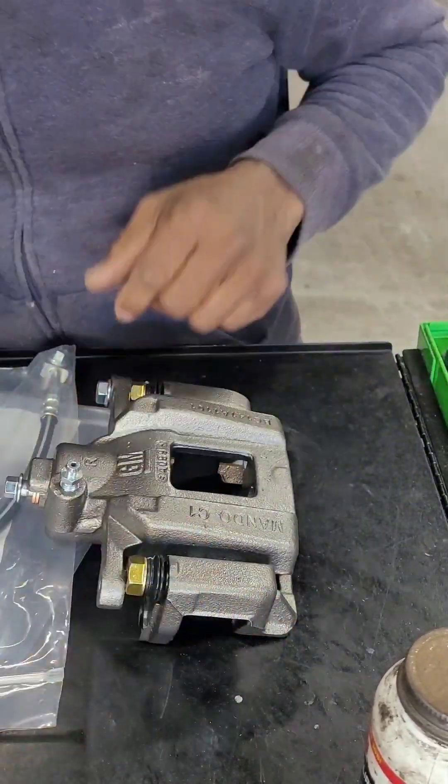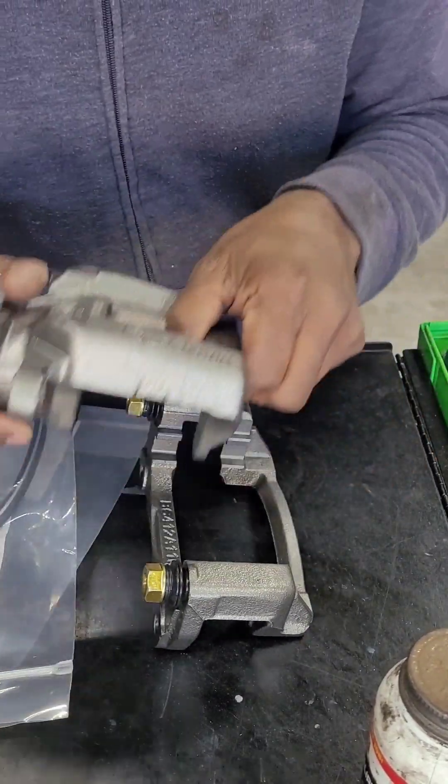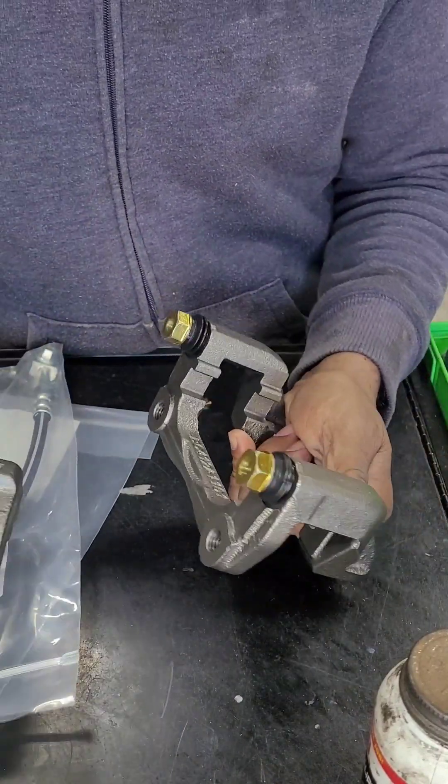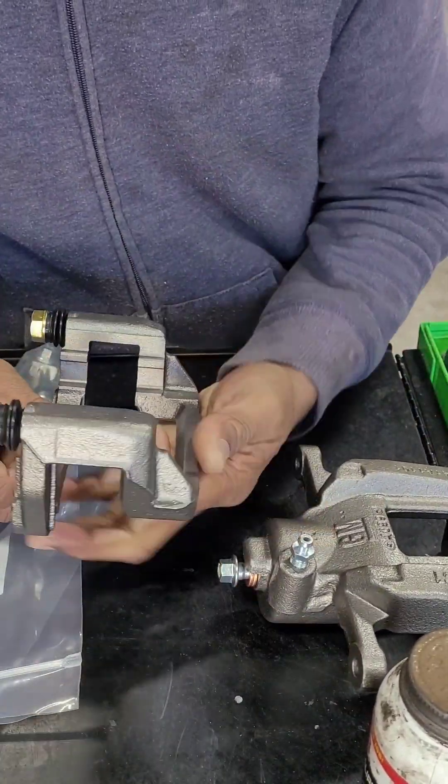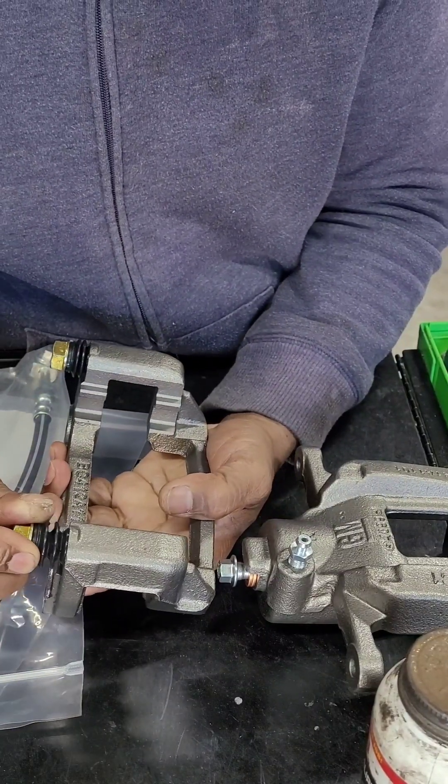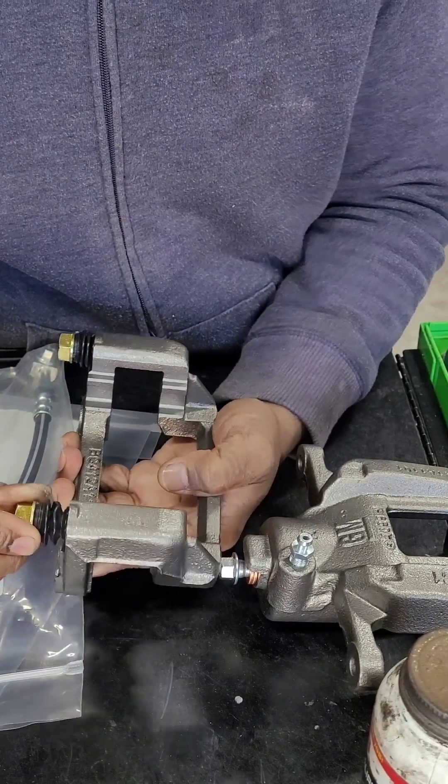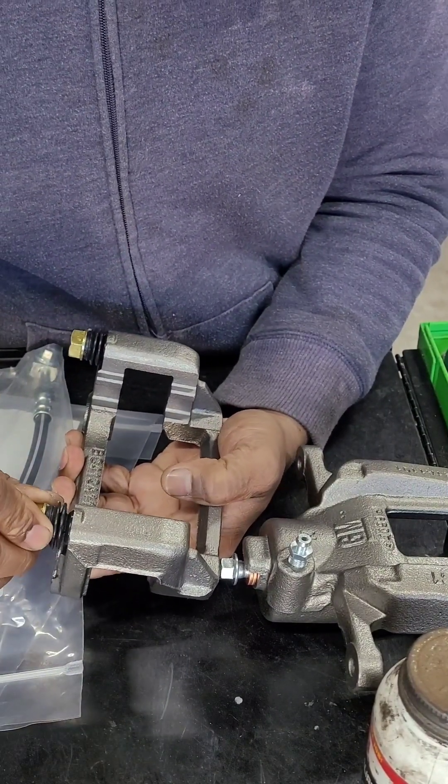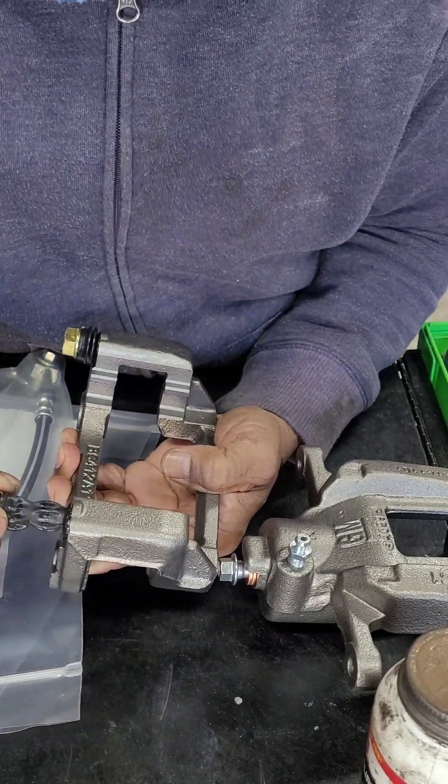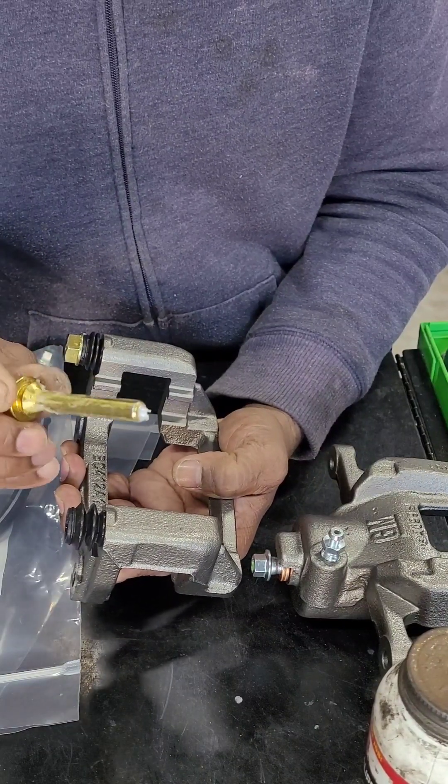So this is your caliper, this is your bracket. Sometimes you'll have a problem with the bracket where this is seized up in there and it's not moving. See, I can move it with my hand like that—that's normal. That's how it's supposed to move. If you've got to take pliers or something to try to move this, then you have a problem.